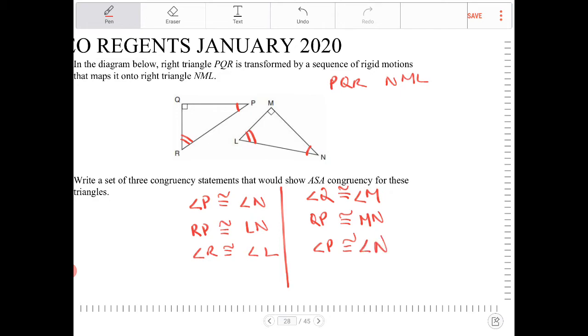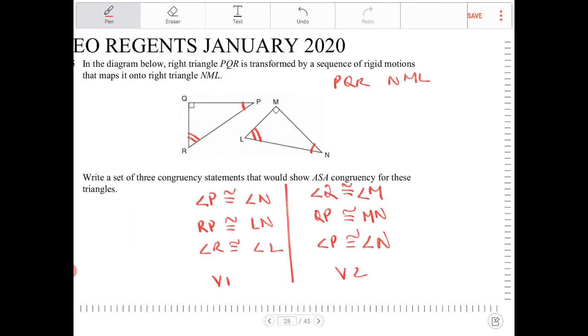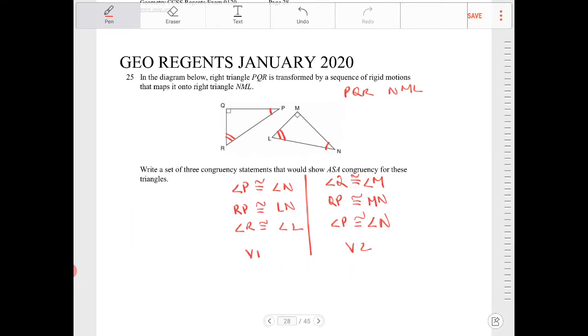These are other variations. So this is version 1. This is version 2. You have many different ways of writing this. Actually, I should not say answer version. I should say answer 1, answer 2.